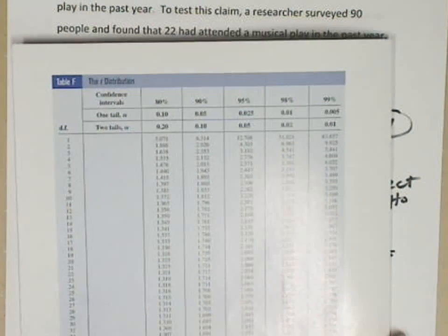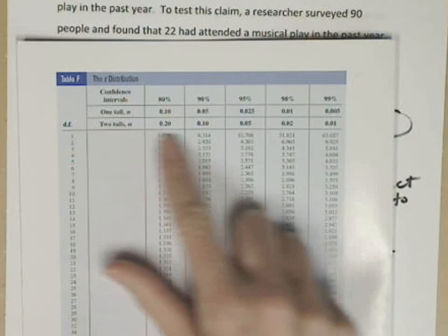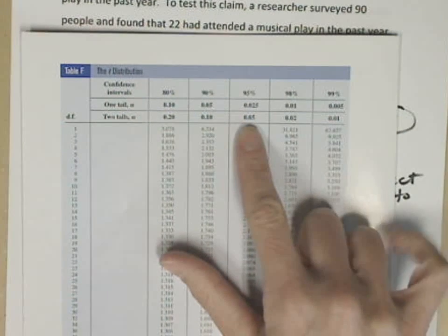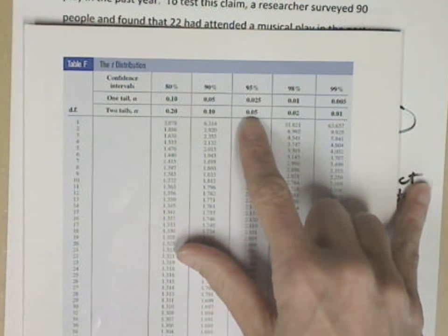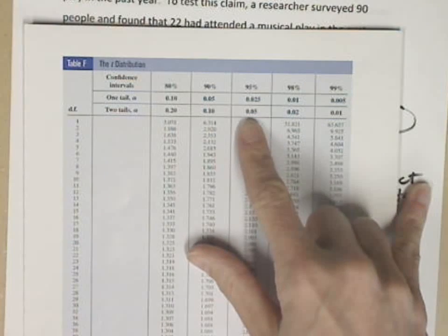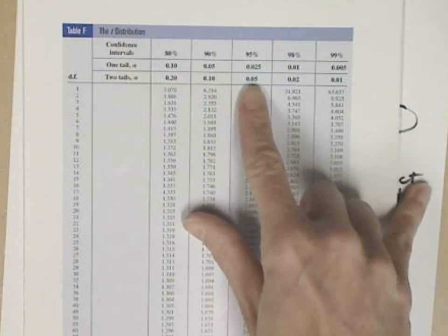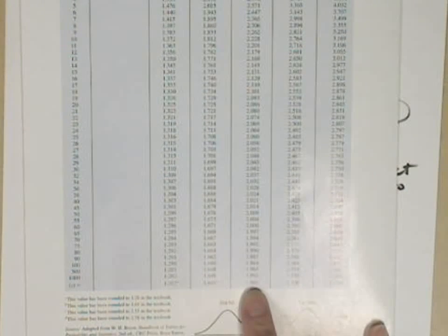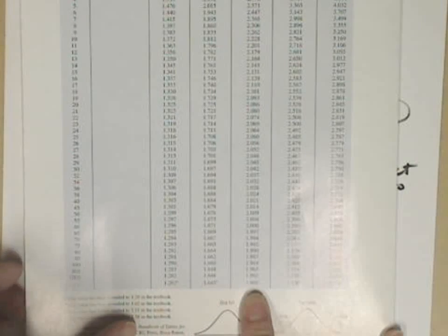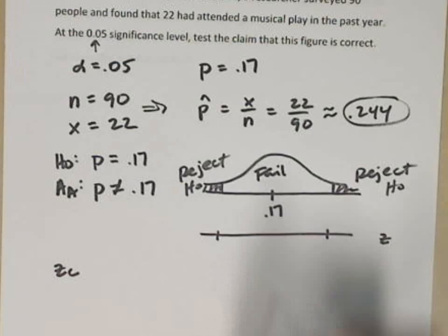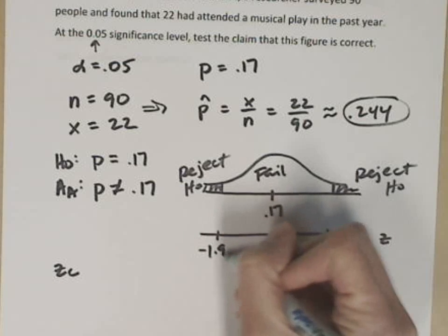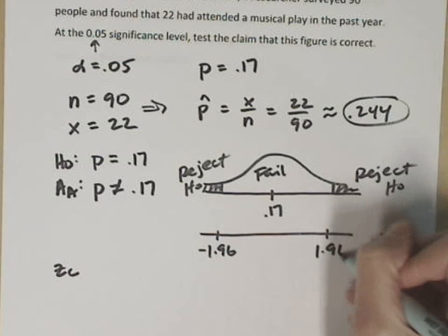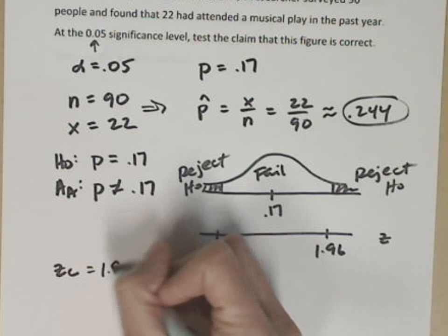If I go to table F, I have a two-tail test. My significance level is .05, and I'm looking for a z-score. I had 90 people, so I don't need to worry about a t-score. I go all the way to the bottom, and at the very bottom of my table, that's 1.96. So our critical value is either negative or positive 1.96.